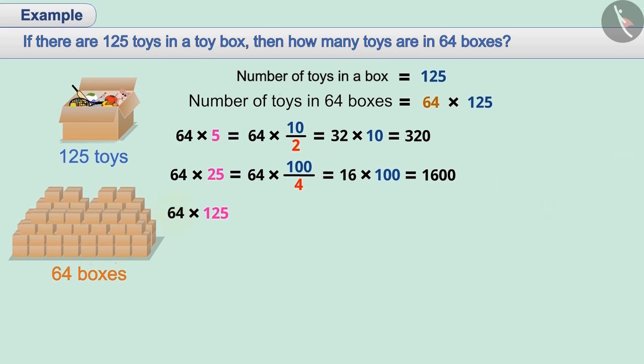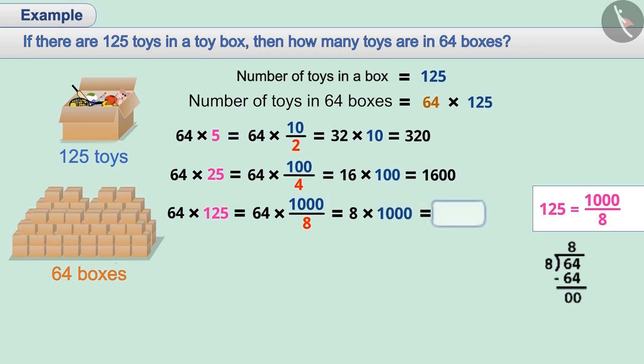Now, in the given example, how will you multiply 64 by 125? 125 is equal to 1000 by 8. Therefore, we will replace 125 by 1000 by 8. Then, we will divide 64 by 8. We get 8 which is further multiplied by 1000 to get 8000.